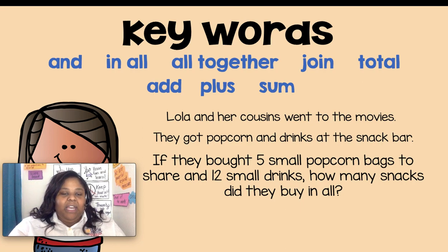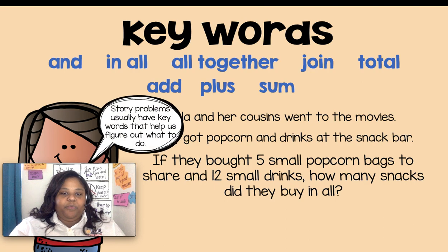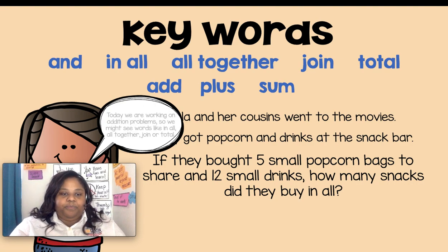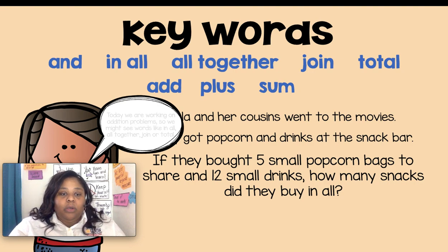I see: and, all, altogether, join, total, add, plus, and sum. Story problems usually have keywords that help us figure out what to do. These words are keywords — they're sort of like special clue words that help you know that it is an addition problem. Today we are working on addition problems, so we might see words like in all, altogether, join, total. You might also see obvious words like add, plus, or sum in a word problem.